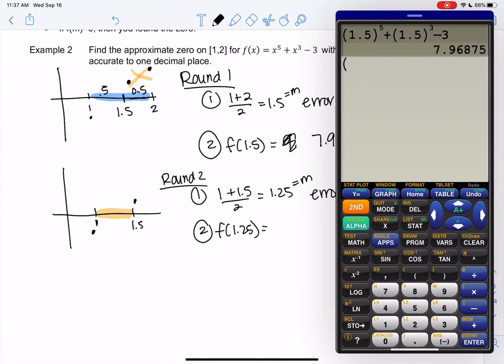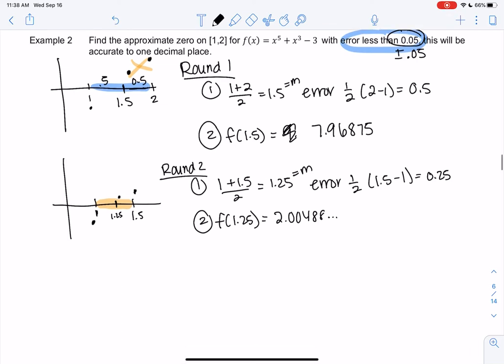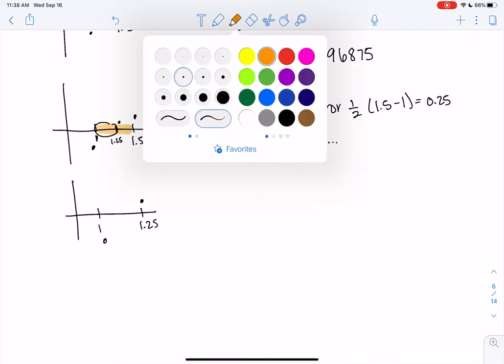So same thing, 1.25 to the fifth. This is tedious. You just have to be patient. Minus 3. If you know how to use tables on this, that works as well. So 2.00488. Main idea is it's positive. So 1.25. So what interval do we use now? We use the interval where the signs change. So we're only going to go from... I like to draw the number line every time. I think it helps me a lot. So we're going to go from 1 to 1.25.